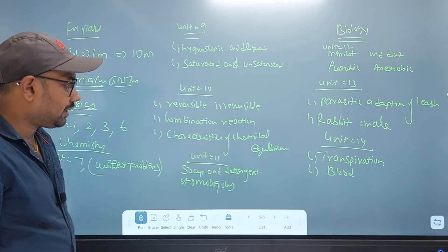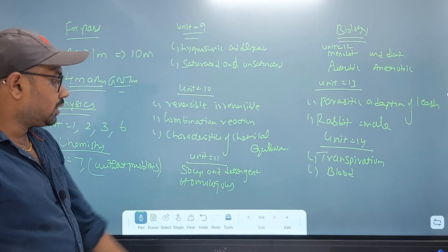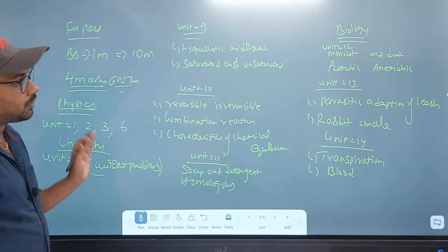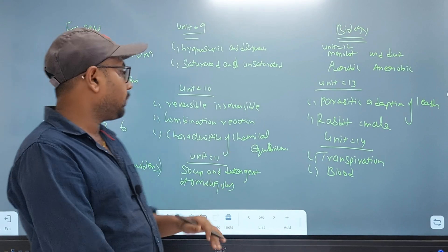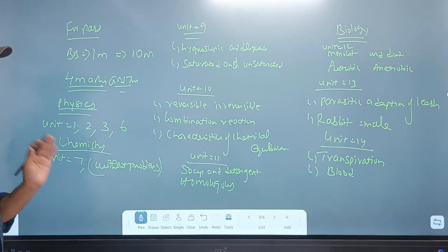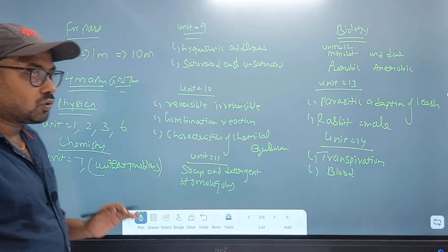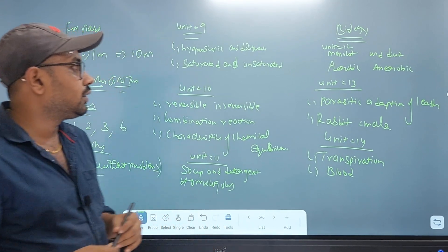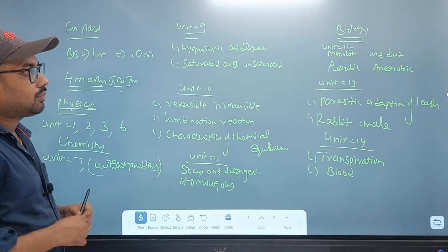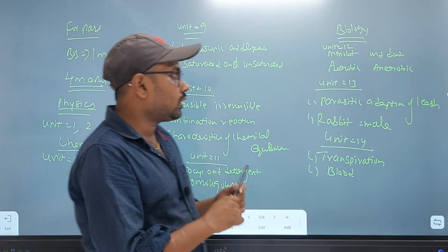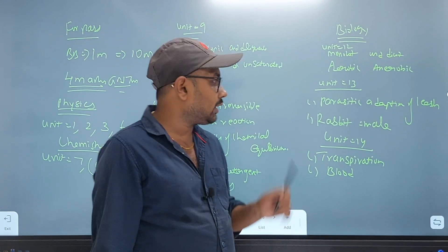In unit 11, it is soap detergent. How do you say it? If you say it, you can say it. In biology, unit 12 — monocot, dicot, aerobic and anaerobic.